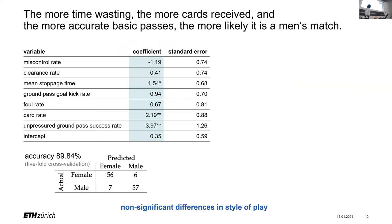Looking at the logistic regression results, we have three statistically significant features. First, mean stoppage time: men's games have larger mean stoppage time, consistent with the stereotype that men waste more time pretending to be injured. Second, number of yellow and red cards: there's a tendency for more cards in men's matches than in women's. Third, unpressured ground pass success rate: men tend to have a higher past success rate for unpressured ground passes. These span both fair play and technical feature categories.